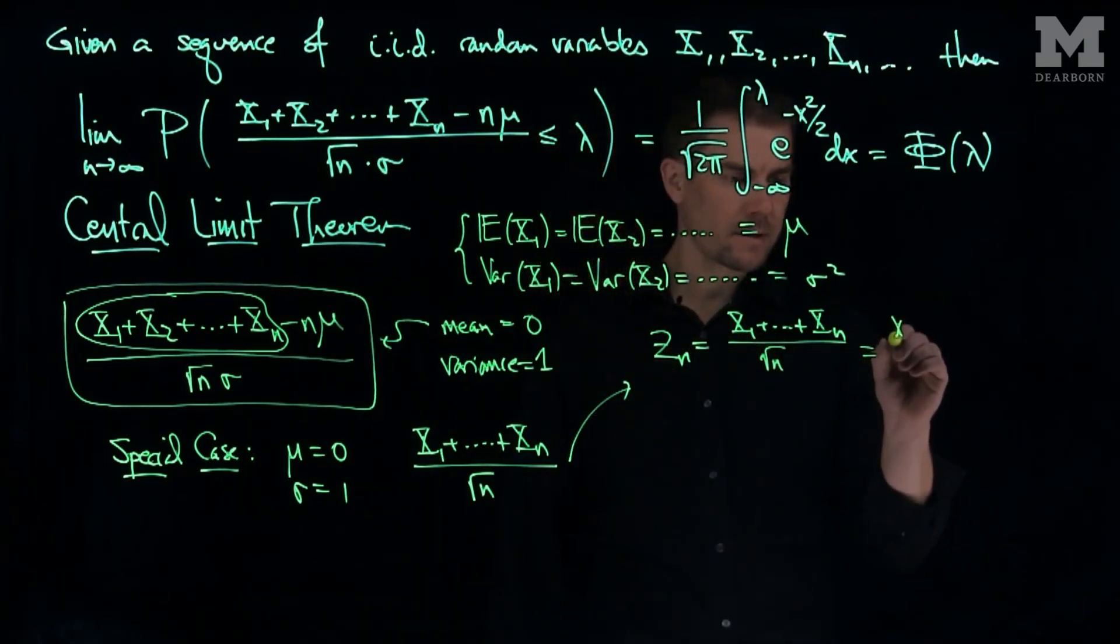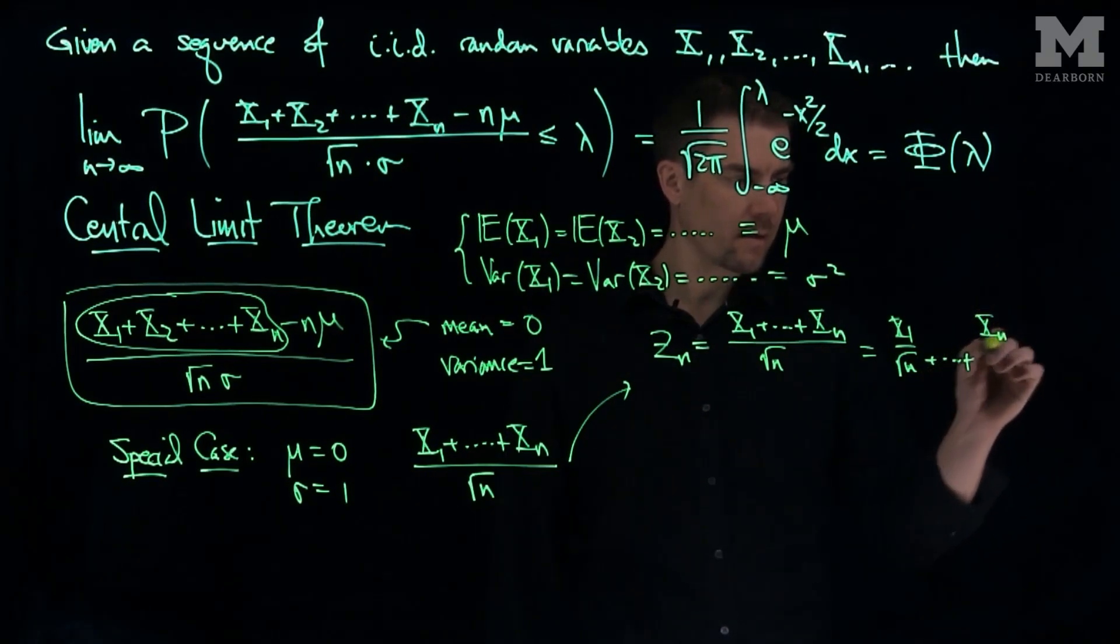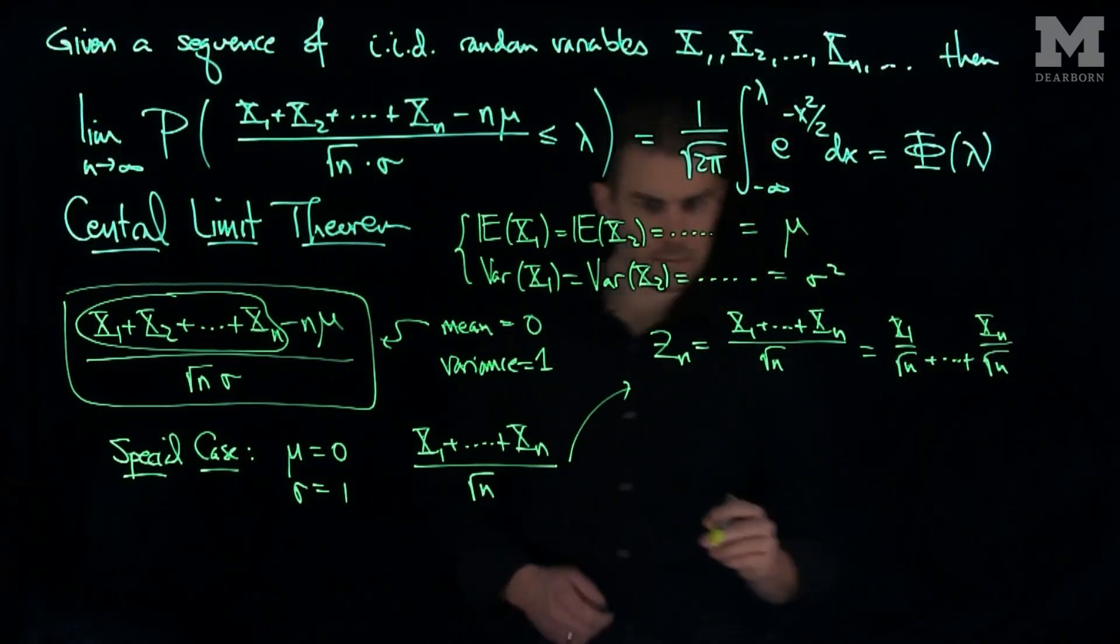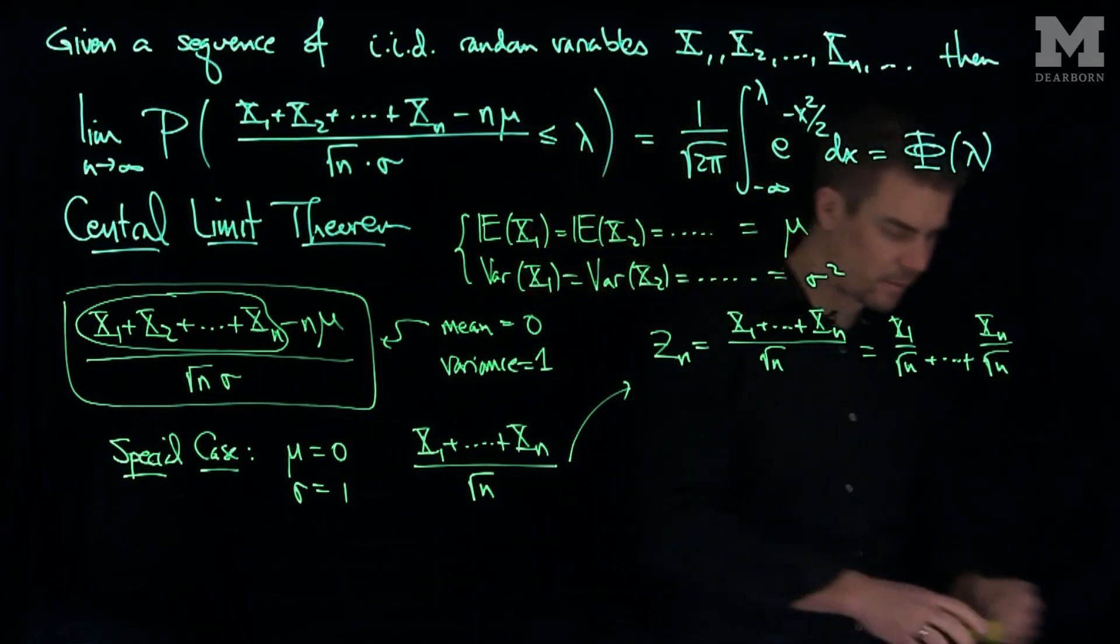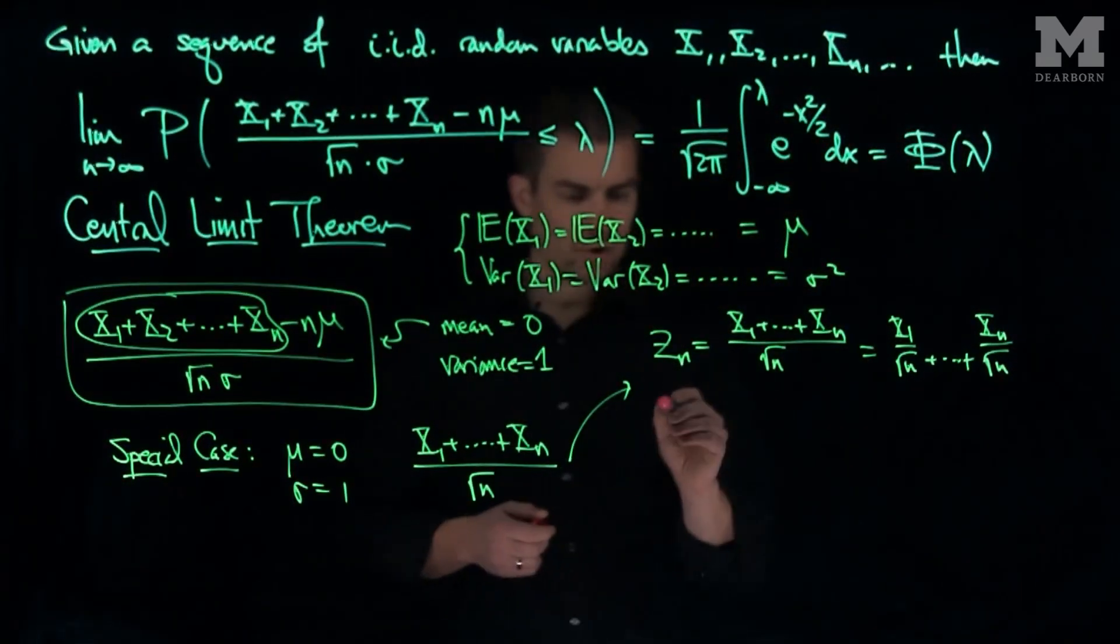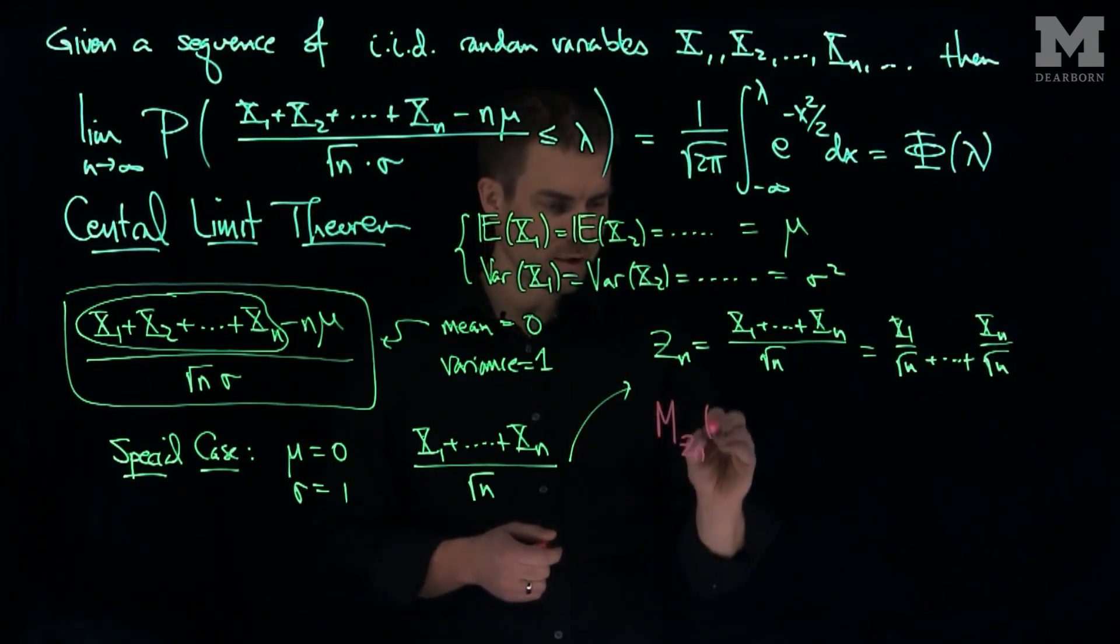Then this is n copies x1 over root n plus xn over the square root of n. And what I can do is I can compute, if I get a sense of why the central limit theorem is true, I can compute the moment generating function of this zn random variable as a function of t.